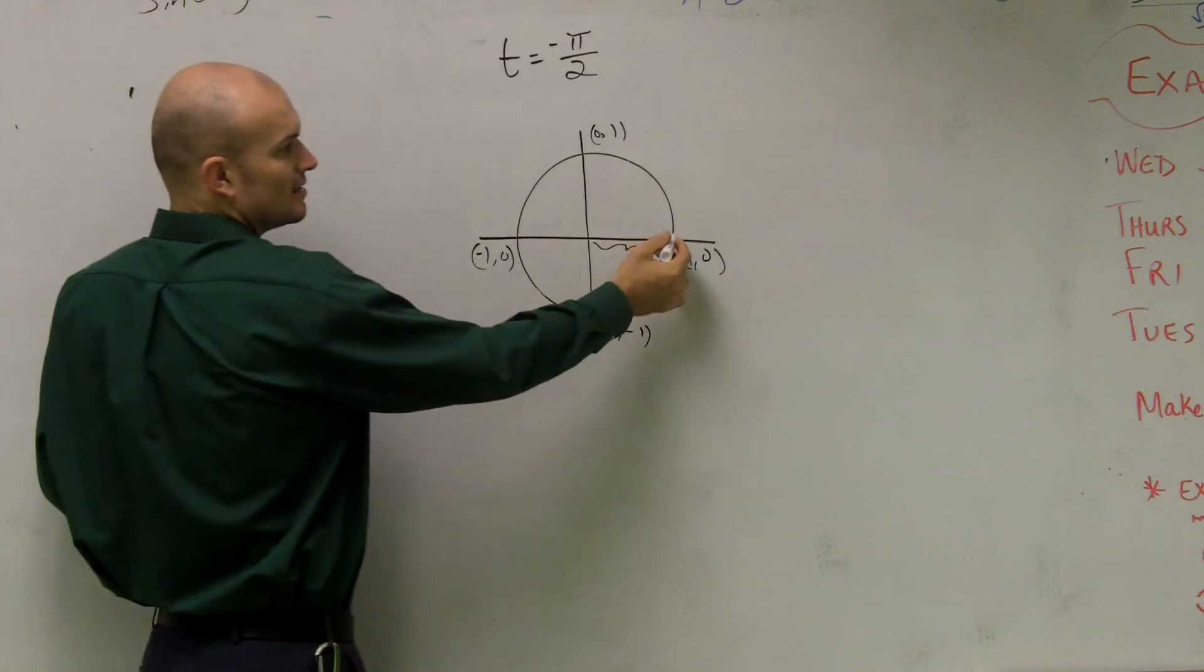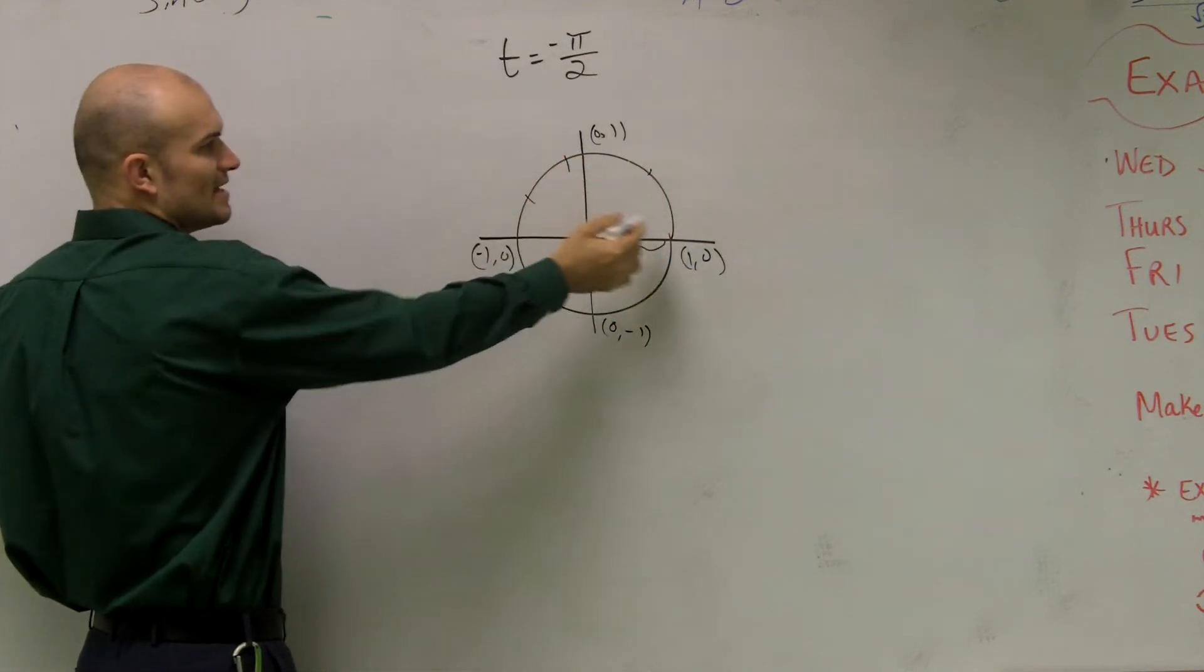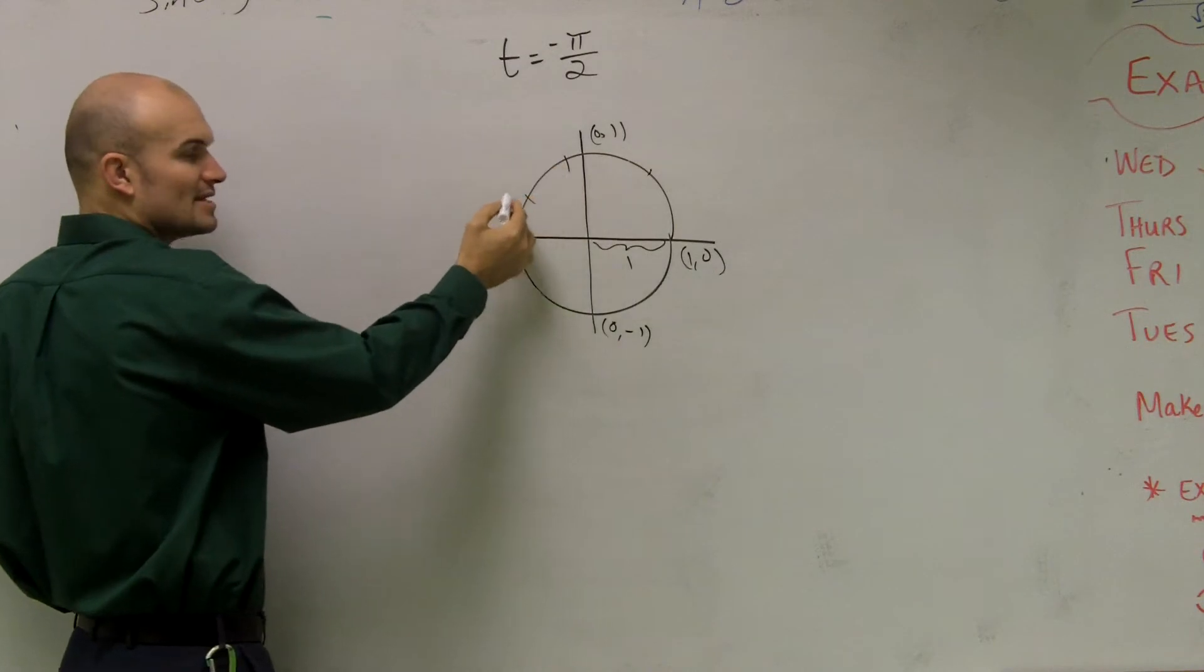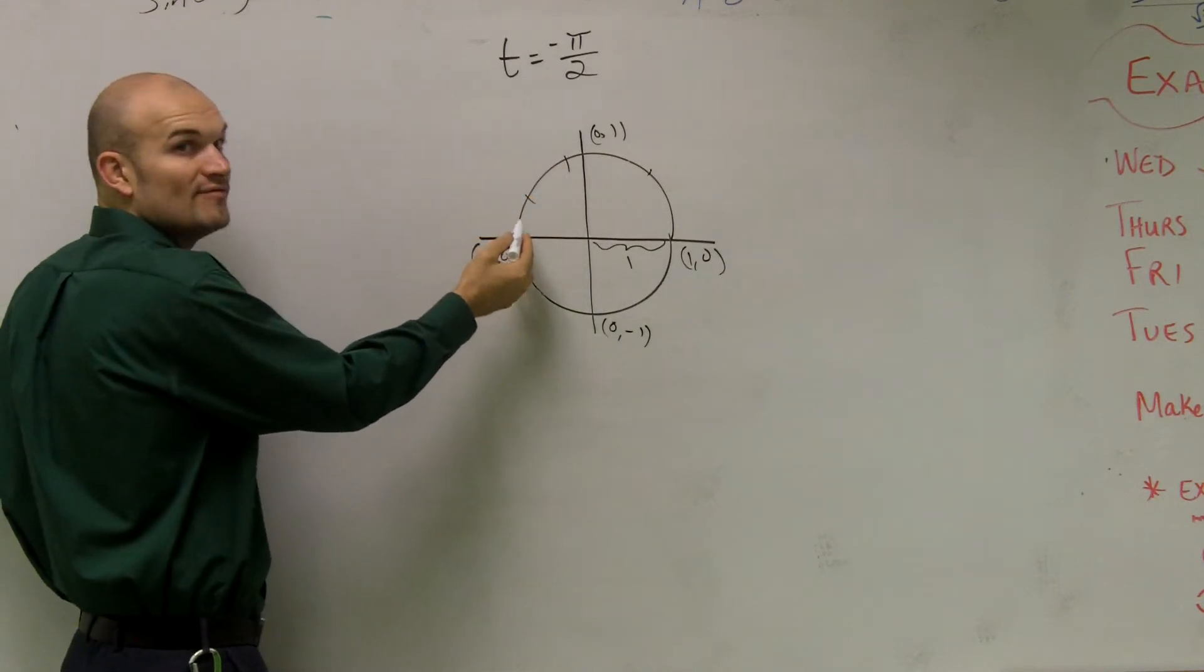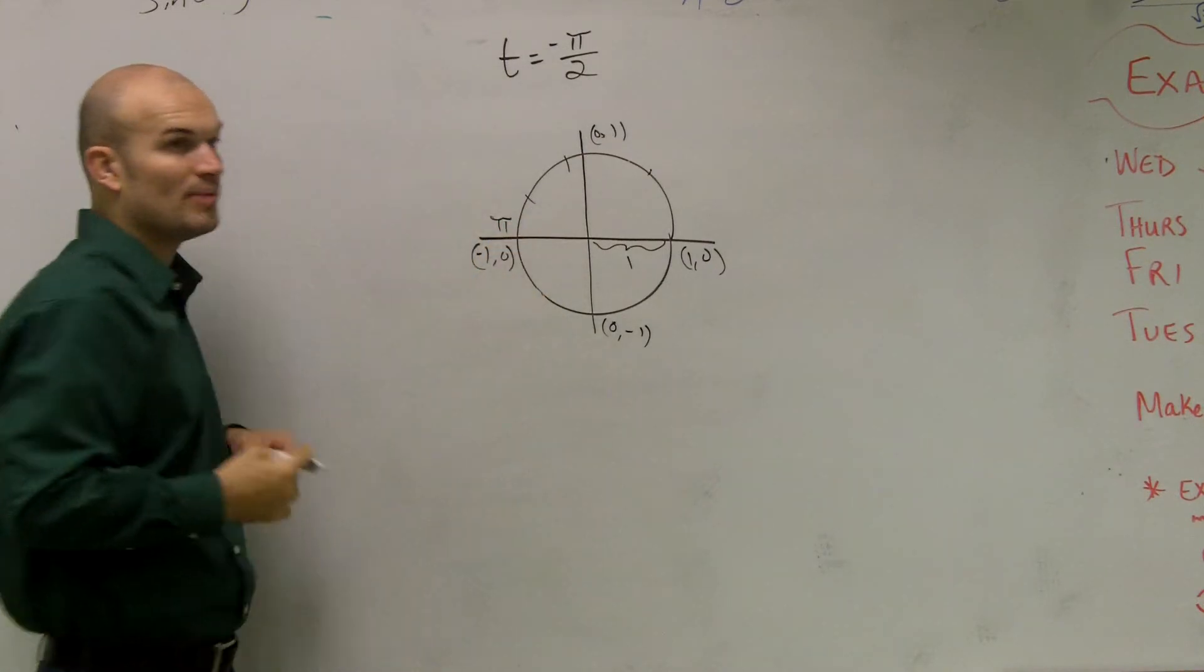So we said radians is taking your radius around your circle. And then we said that 1 radian, 2 radians, 3 radians. And then all the way to here is 3.14159 radians, or what we call pi radians, right?